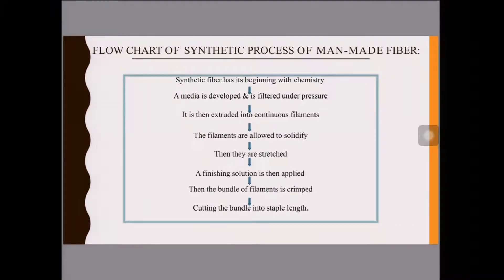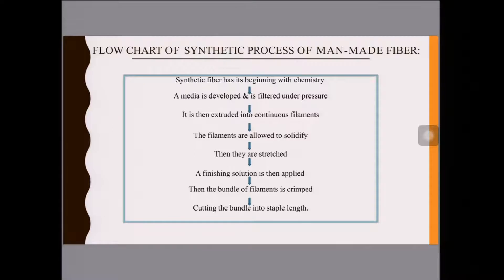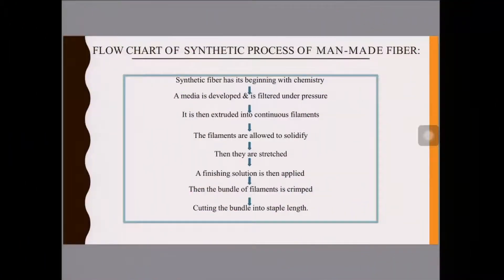This is a generalized flow chart of the synthetic process of man-made fibers. Initially, the synthetic fiber is manufactured through synthetic chemistry, the melt is developed and filtered under pressure, then extruded into continuous filaments. The filaments are allowed to solidify, then stretched by the drawing process. Finally, a finish is applied, and the bundle is crimped or, if going for texturizing, it is cut into staple filaments.